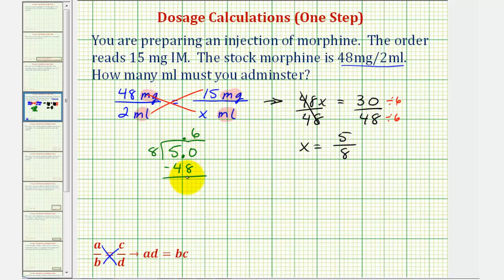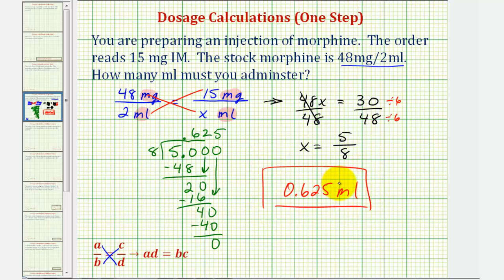Subtract. This difference is two. Add another zero and bring it down. There are two eighths in 20. Two times eight is 16, and we subtract. That would be four. Add another zero and bring it down. And finally, there are five eighths in 40. Five times eight is 40. We subtract. This difference would be zero, so we stop. So to answer the question, we need to administer 0.625 milliliters of morphine, or five eighths of a milliliter. I hope you found this helpful.